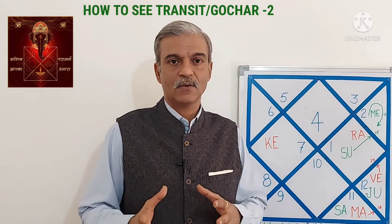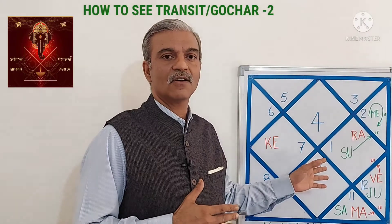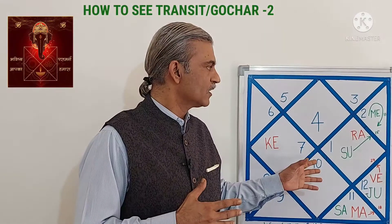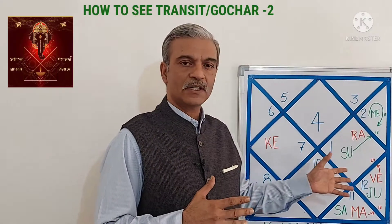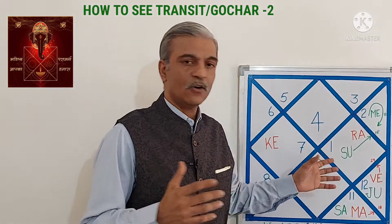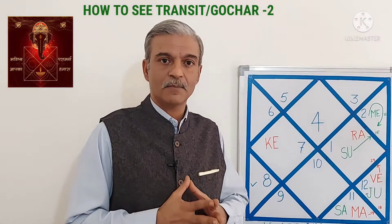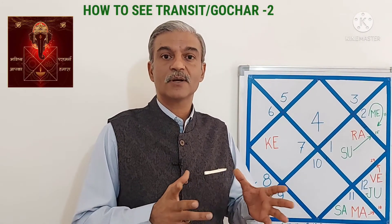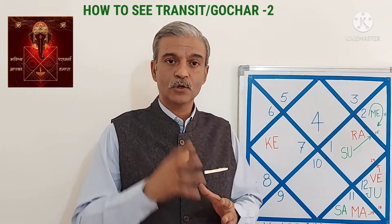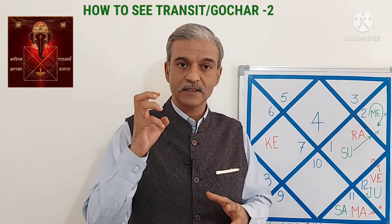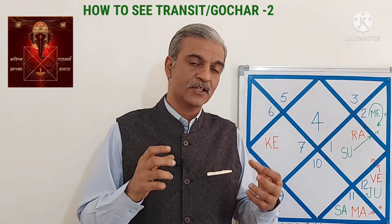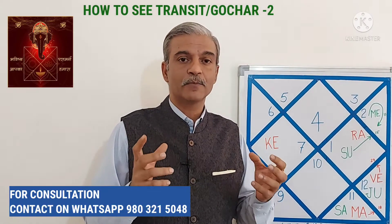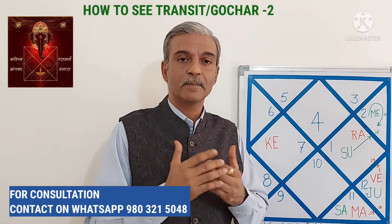When we look at this transit or real time position or gochar, there is always a confusion about what kind of results are going to come and how the results will come, and then what about our Dasha-antardasha and Pratantardasha. Do we have to take the gochar or do we have to take the Dasha-antardasha and Pratantardasha, and if we have to take both then how do we match them?